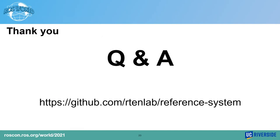That is pretty much my presentation. I'm happy to take questions. The first question: how should a user assign priorities to callbacks? Are there any rules of thumb, like shorter tasks getting higher priority? We propose a priority assignment scheme that tries to satisfy our callback scheduling strategy. If you are interested in how to assign callback priorities, please visit our paper and check the algorithm.